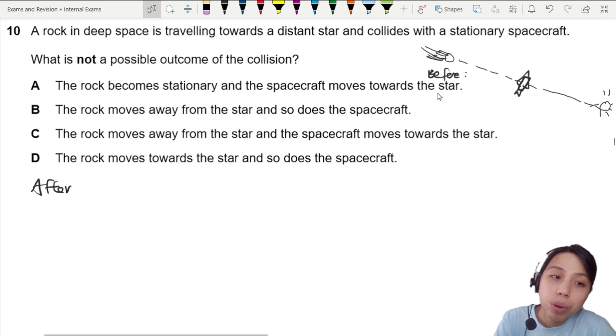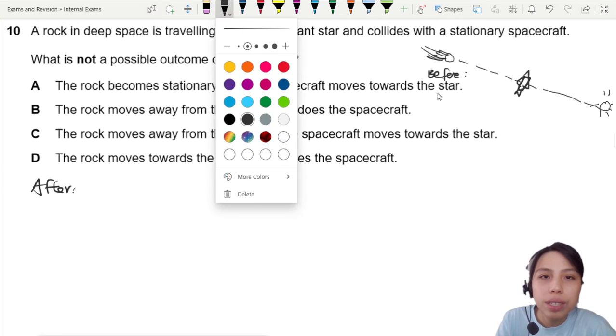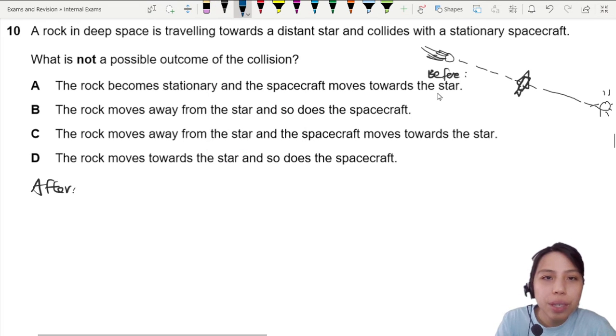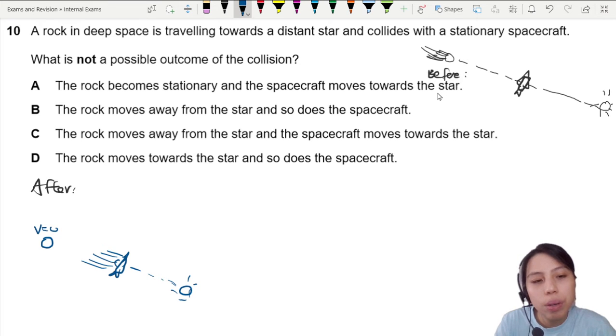Oh so all the momentum transfers to the rock, so after, maybe the rock suddenly stopped moving, then the spacecraft starts to move towards the star. Possible after collision, I give you my momentum, you go. Okay possible, possible.